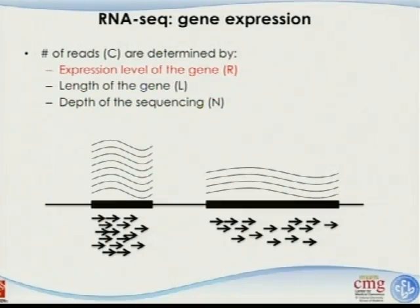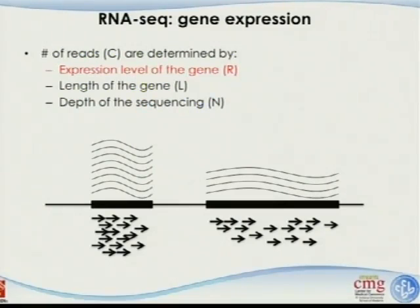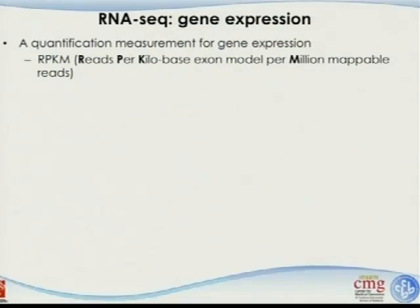The first factor is the level of expression of the gene — some genes express more than others, and the more it is expressed, the more reads we will detect. The second one is the length of the gene: longer genes have the potential to produce more reads. The third one is the depth of sequencing. For different samples, one may use 20 million reads to map the entire transcriptome, and another uses 50 million reads — of course you will detect more signal in the second sample, but that doesn't mean the gene expression level is higher.